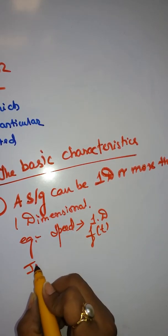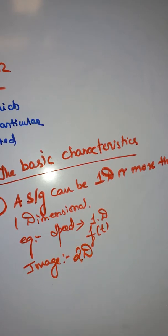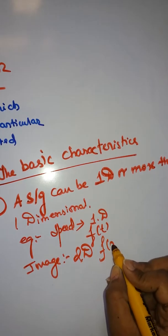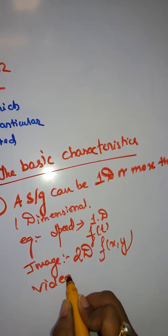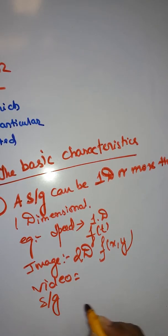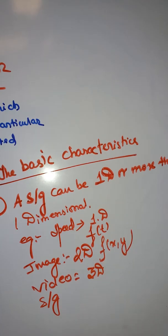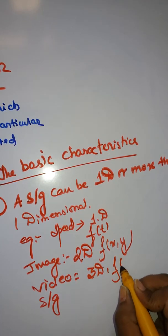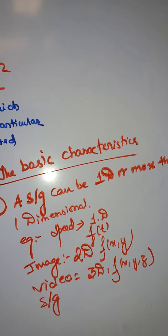Your image is two-dimensional. Your video signal is a 3D signal. You can mention it as a function of three variables. So signal can be the function of one or more than one independent variables.